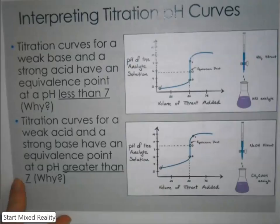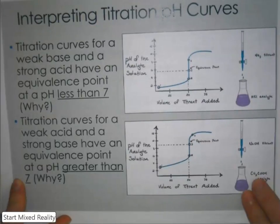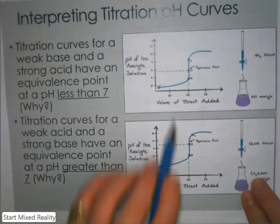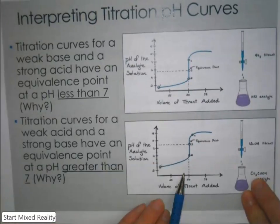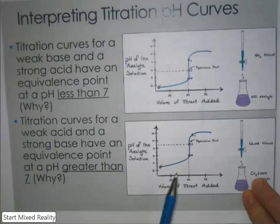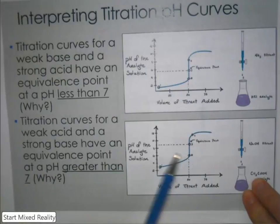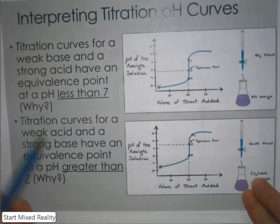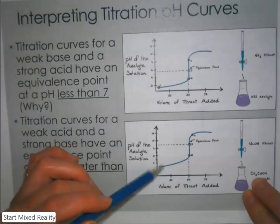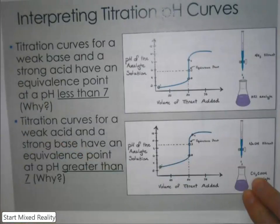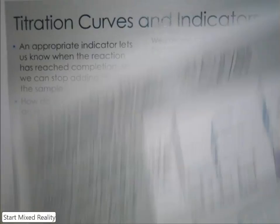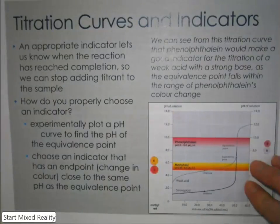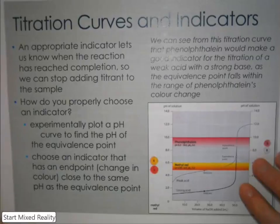You won't be asked to draw these curves for weak acid/base combinations on the test, but you should have a general understanding of why the equivalence point pH might be different if you don't have a strong acid and a strong base.